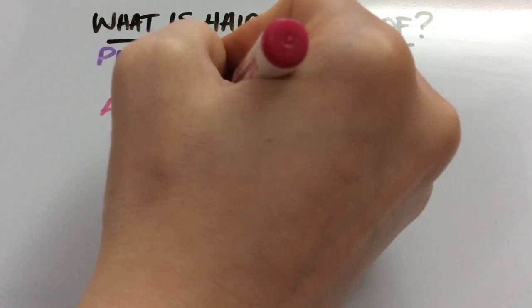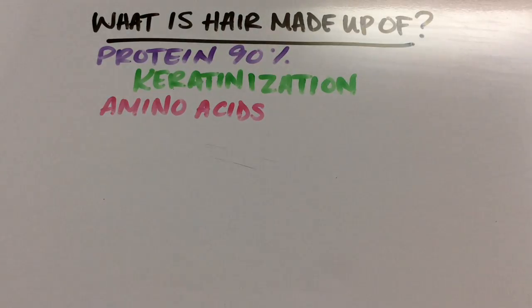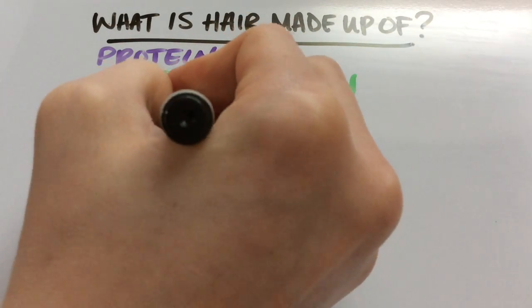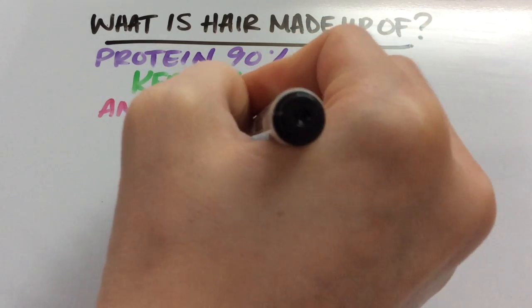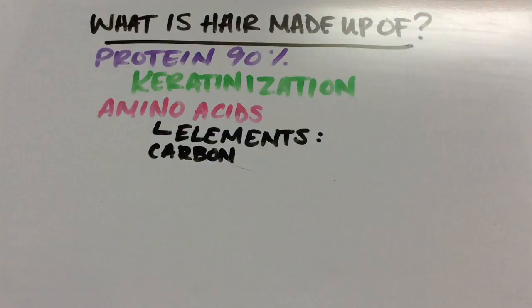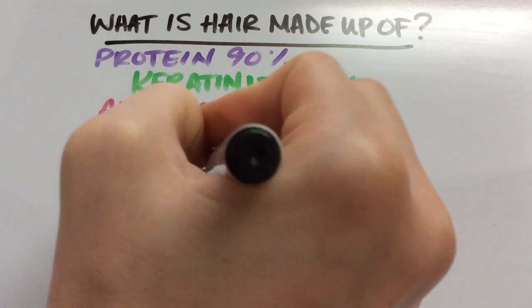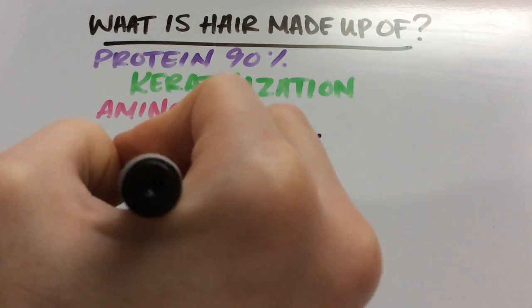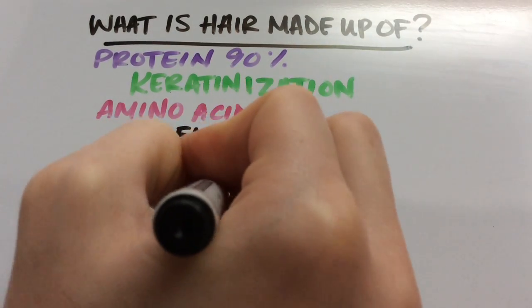Hair is approximately 90% protein and is made up of long chains of amino acids, which in turn are made up of elements. The major elements in mature, normal human hair are carbon, oxygen, hydrogen, nitrogen, and sulfur.